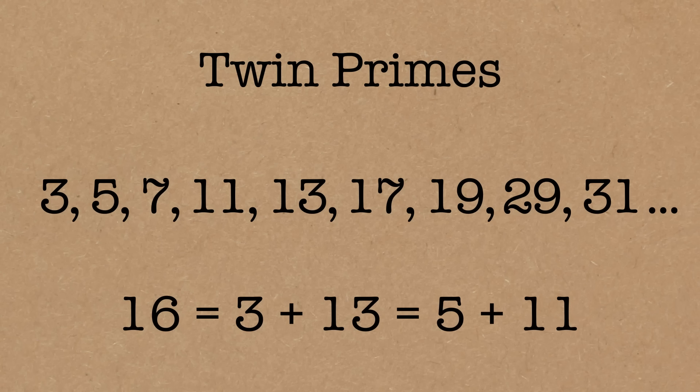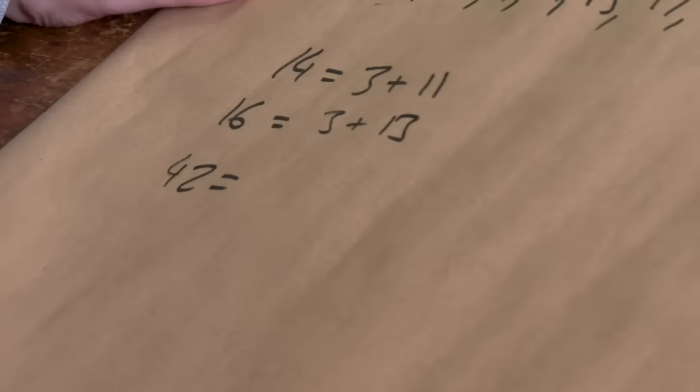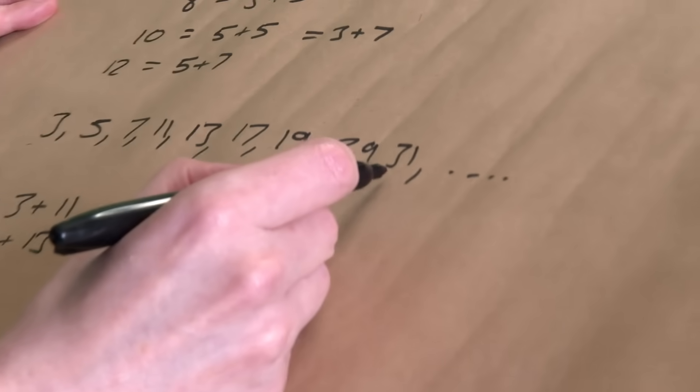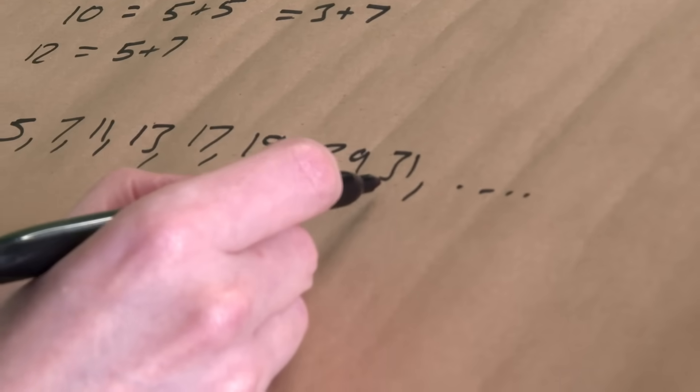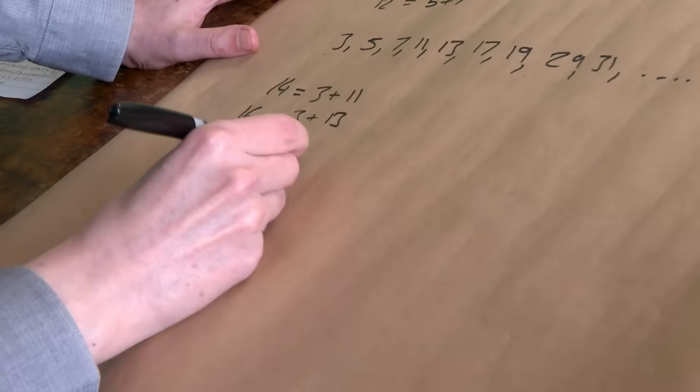Let's do 42. I don't know what 42 is — some live mathematics here. 42 is going to be 31 plus 11. 31 plus 11 can be written as two twin primes — they don't have to be partners, they don't have to be a twin prime pair.